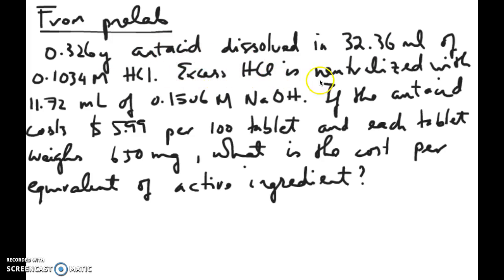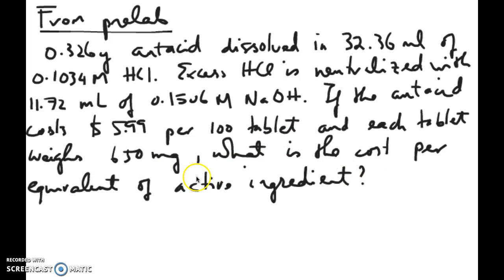Whatever that excess HCl is is going to be neutralized with some sodium hydroxide. The volume and the concentration of the sodium hydroxide is also given to you. Let's say the antacid costs $5.99 per 100 tablets and each of those tablets weighs 650 milligrams. What's the cost per equivalent of active ingredient?